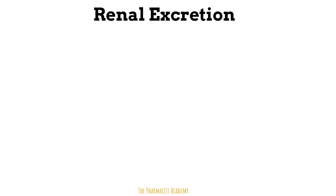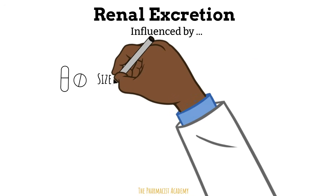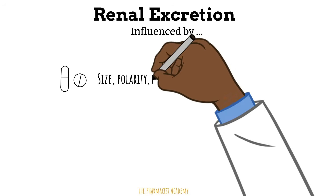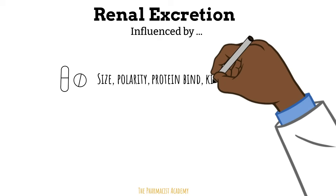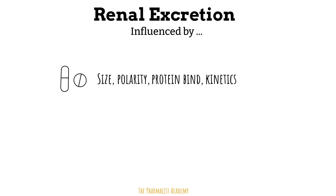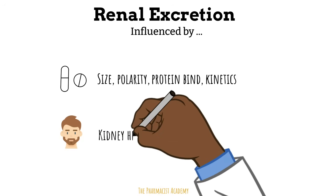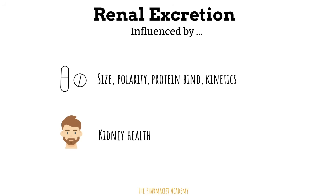Let's focus on renal excretion and the factors that can impact it. For drug-related factors: size, polarity, and whether the drug is bound to proteins — only the free, unbound drug gets eliminated. For patient-related factors: the health of the kidneys including clearance, blood flow to the kidneys, urine pH which can promote excretion or reabsorption back into circulation, and concurrent use of drugs that may interact with the main drug during excretion.